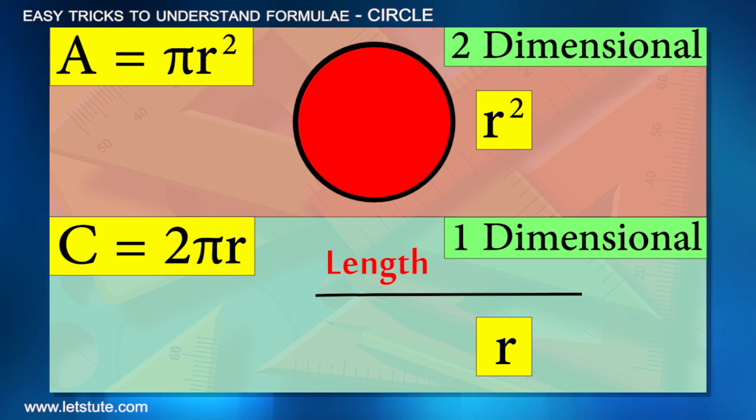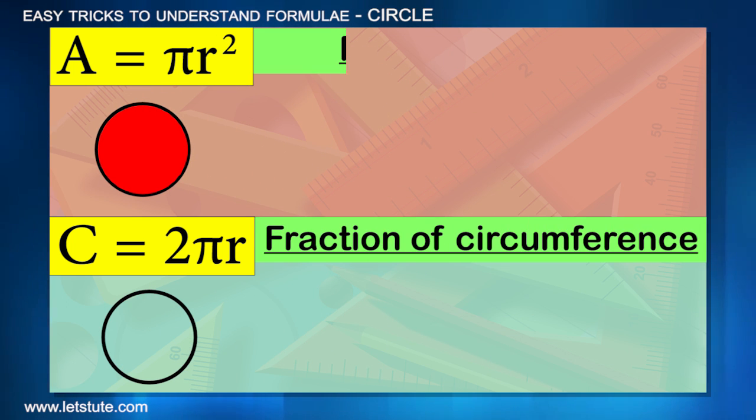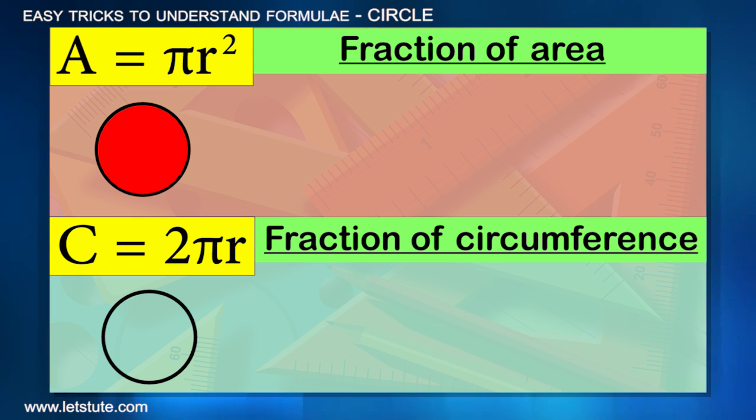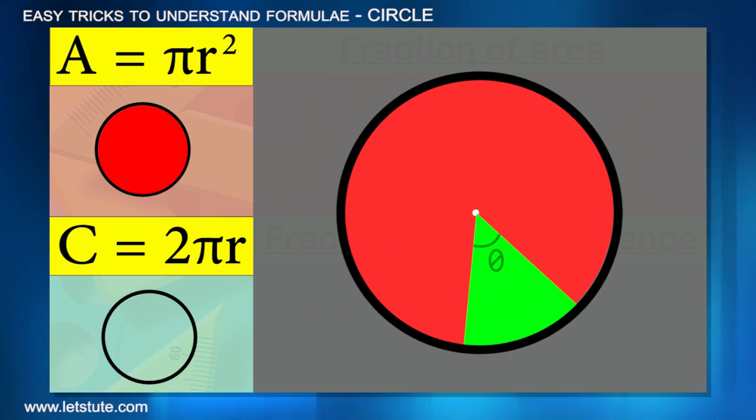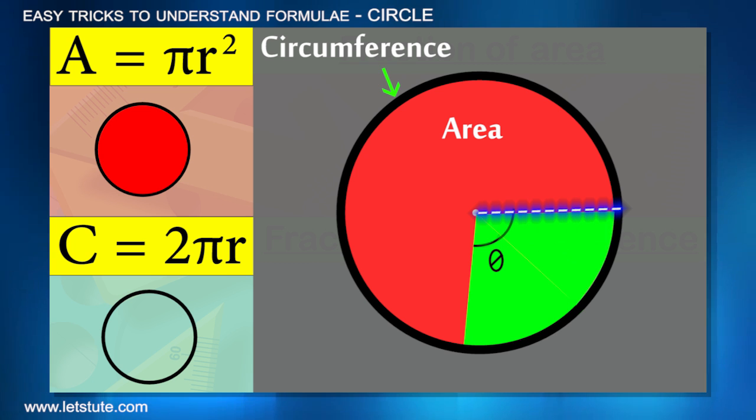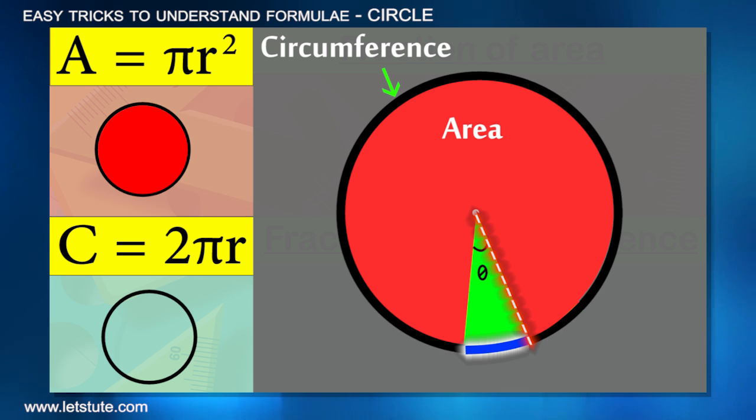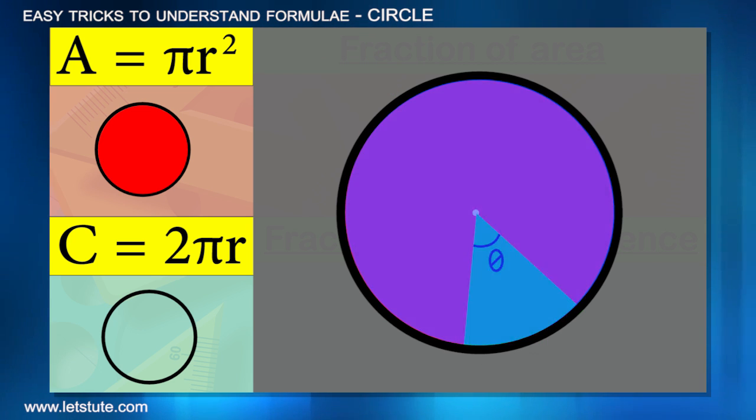The next two formulas are based on these two. If you need to find a fraction of circumference or area, we need the circumference and area formulas, but we need a fraction. Some measure of angle is given which covers the circumference and area. The area or circumference that we need to find depends on this angle. If we increase the angle, the area and length of circumference covered also increase. If we reduce the angle, the area and circumference also reduce.